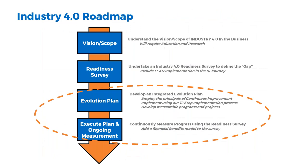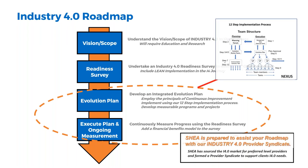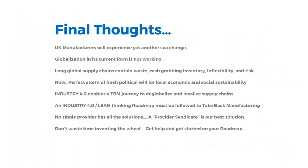After the readiness survey, you need to build an evolution plan. You've done a lot of the work already with the survey — now you need to turn it into a series of projects. We also have a 12-step implementation process for those who haven't already established one for their lean journey. The market is still very fragmented in terms of provision; there are a lot of experts who offer parts of Industry 4.0. What we also offer is a syndicate of all the experts that can engage in the readiness survey with you and assist with the evolution plan.